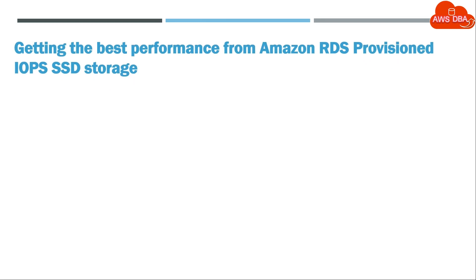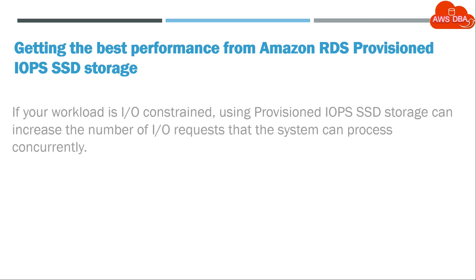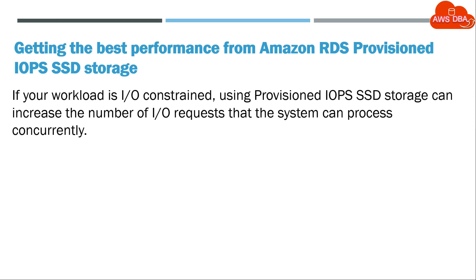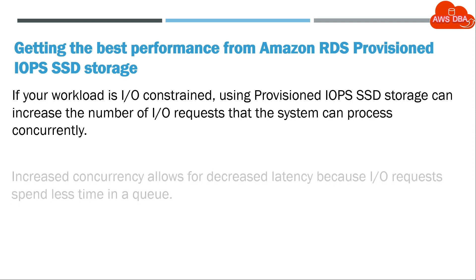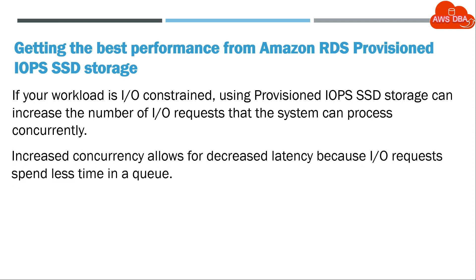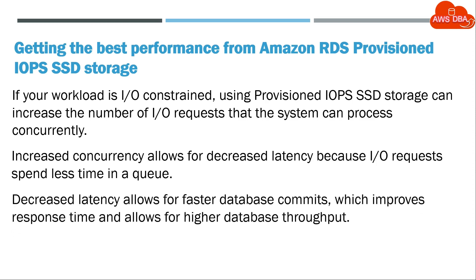Getting the best performance from Amazon RDS provisioned IOPS SSD storage: if your workload is IO-constrained, using provisioned IOPS SSD storage can increase the number of IO requests that the system can process concurrently. Increased concurrency allows for decreased latency, because IO requests spend less time in a queue. Decreased latency allows for faster database commits, which improves response time and allows for higher database throughput.